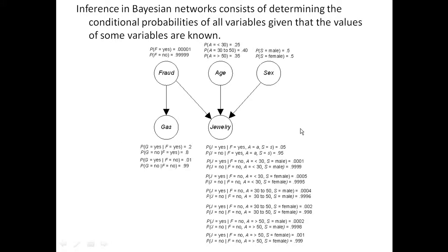Here is a Bayesian network that has to do with detecting credit card fraud. It's from an actual system created by David Heckerman of Microsoft. It's the kind of thing that goes on when you go to use your credit card, for example, at a gas station on the road, and you suddenly find it's denied.